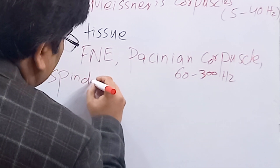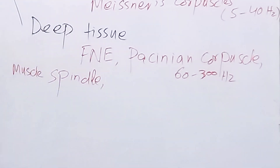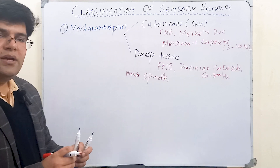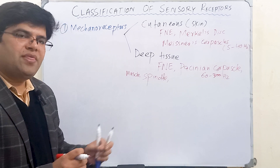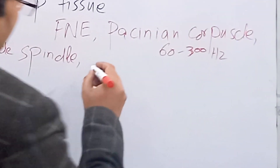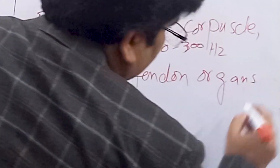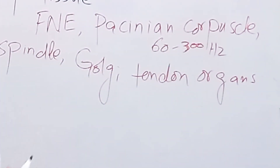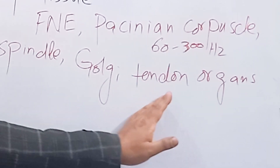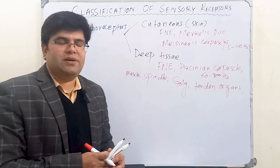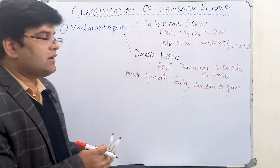Two other kinds of receptors are also present in the deeper tissues. One is the muscle spindle — present in the muscles — which detects lengthening or change in the length of a muscle. The other is the Golgi tendon organ, present in the tendons, which detects the change in tension of a muscle. So change in tension is detected by the Golgi tendon organ, and change in length by the muscle spindle.